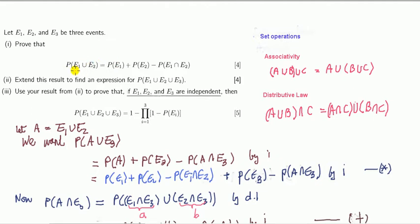So part two says extend the result from one which we've proved already in a different video. Result one involves two sets. We can turn this three sets into two by just grouping any of the two. So we'll just take E1 union E2 to be one set. Let's call that A.